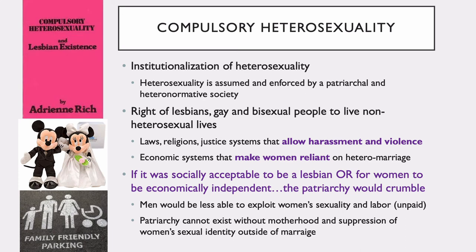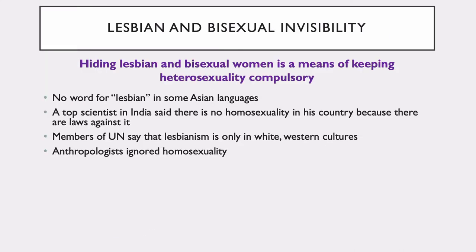What we need to recognize is the rights of lesbians, gay, and bisexual people to live non-heterosexual lives. Unfortunately, there are still laws, religions, and justice systems that allow for harassment and violence against people who live non-heterosexual lives. Economic systems themselves still tend to make women reliant on heteromarriage. If it were socially accepted to be a lesbian or for women to be economically independent, the patriarchy would crumble — men would be less able to exploit women's sexuality and labor. Patriarchy cannot exist without motherhood and the suppression of women's sexuality outside of marriage. Hiding lesbian and bisexual women is a means of keeping heterosexuality compulsory.